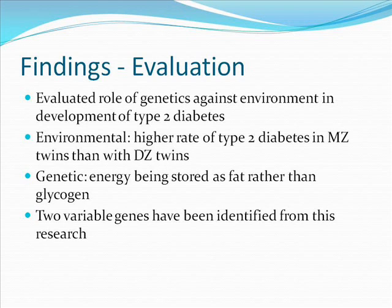An aspect found in terms of the environmental factor affecting the development of type 2 diabetes was that there was a higher rate of type 2 diabetes in monozygotic twins than with dizygotic twins. Examples of environmental factors also include obesity and a common Western lifestyle. From the research of the twin model, two variable genes have been identified. The second variable gene, called Pro12Ala, was found to be the most common gene in subjects with type 2 diabetes.